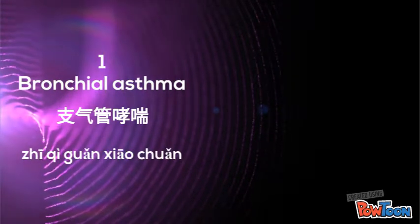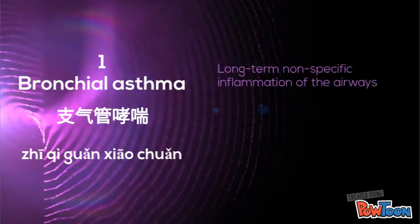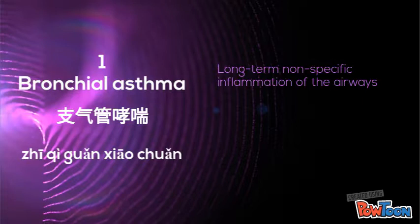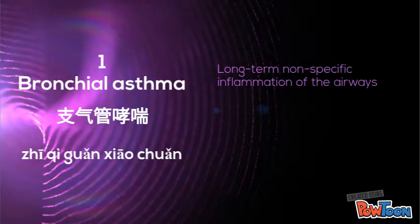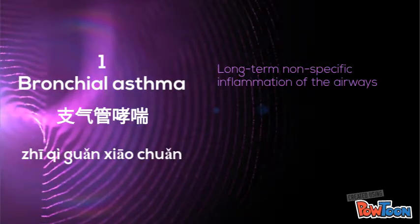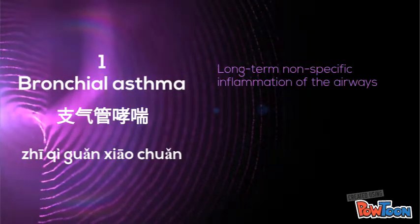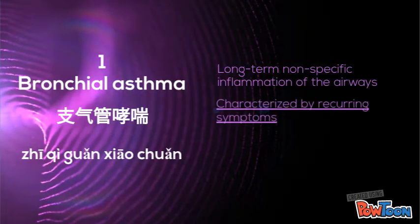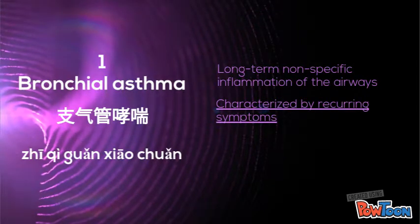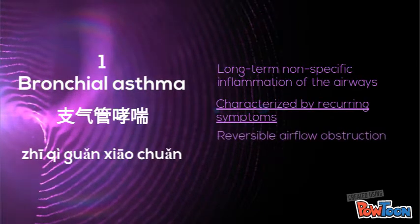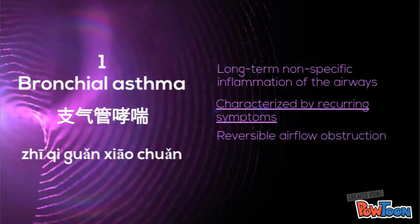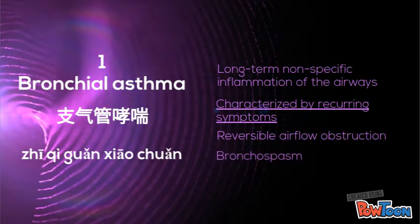Bronchial Asthma — Zhi qi guan xiao tuan. It's a long-term, non-specific inflammation of the airways of the lungs. It's characterized by recurring symptoms, reversible airflow obstruction and bronchospasm.